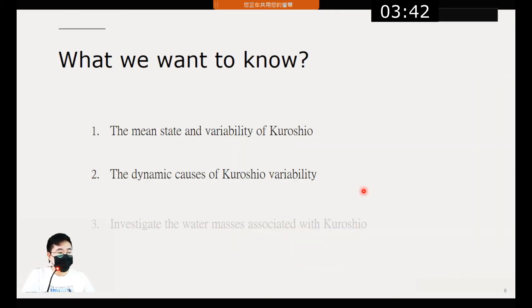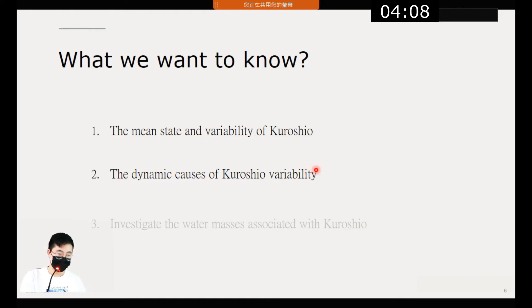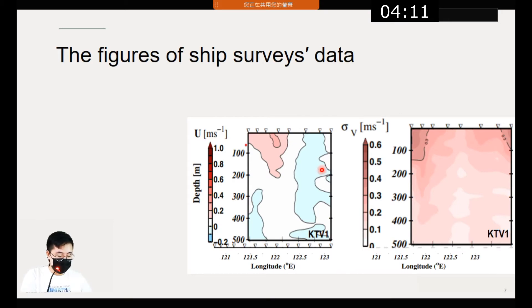Returning to what was said at the beginning — we want to know the mean state and variability of the Kuroshio and what causes its variability. Now we have ADCP observations of velocity and CTD observations of temperature and salinity, so we can discuss the first and second points. I will now introduce the data.